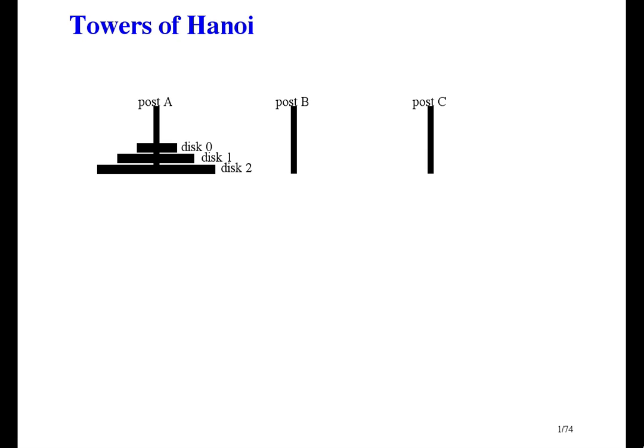The discs have different sizes, and they're numbered, with the smallest disc, disc 0, on top, and the biggest disc, disc N-1, on the bottom. The problem is to move all the discs from Post A to Post B. You can move only one disc at a time, and you can never put a bigger disc on top of a smaller disc. Post C is needed as temporary storage.